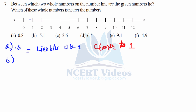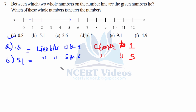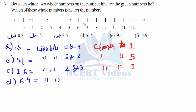Similarly for the rest: 5.1 lies between 5 and 6 — it is only 0.1 apart from 5, so it is closer to 5. 2.6 lies between 2 and 3 and is closer to 3. 6.4 falls between 6 and 7 and is closer to 6 because it is less than 0.5 away from 6.